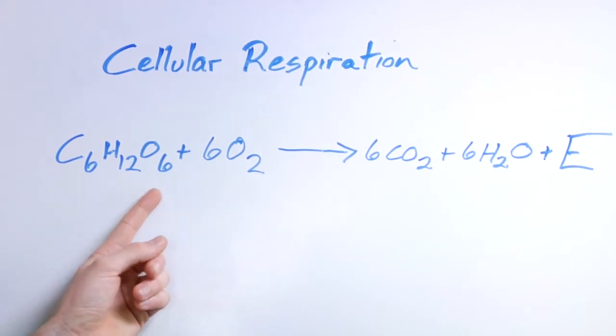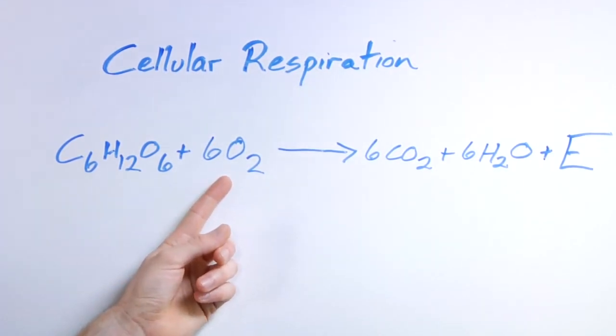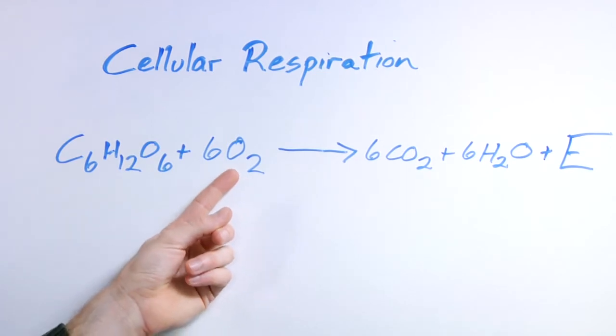And glucose plus oxygen, you have six of those, and oxygen is always O2 when it's by itself.